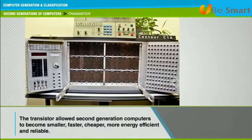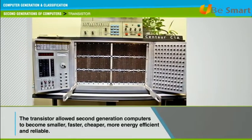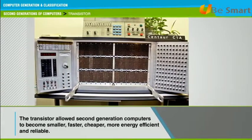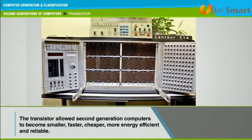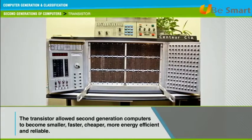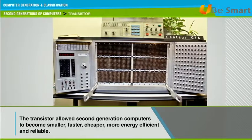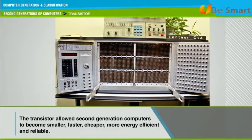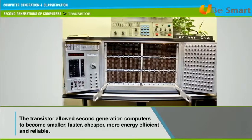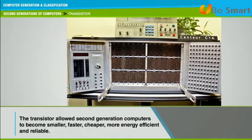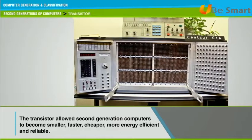The transistor was far superior to the vacuum tube, allowing second generation computers to become smaller, faster, cheaper, more energy efficient, and reliable than first generation computers. Though the transistors still generated a great deal of heat that could damage computers, they were a vast improvement over the vacuum tubes.